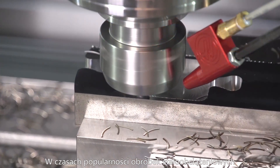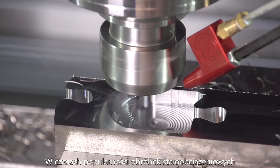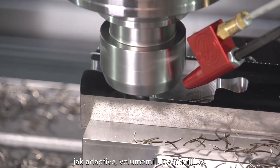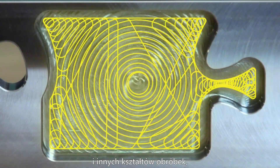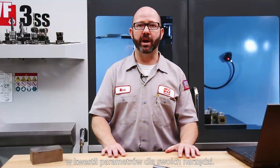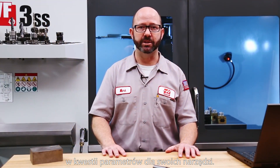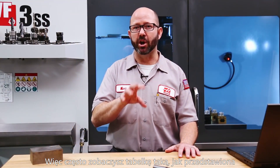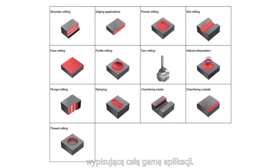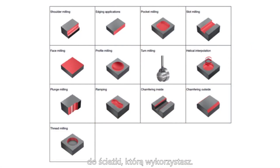With the popularity of optimized tool paths — like dynamic, adaptive, volume mill, and high-speed machining tool paths — the tool manufacturers are getting more and more specific with their speed and feed recommendations. You'll often see charts listing all kinds of different tool paths, and you'll choose one and match your speed and feed to the path you're using.